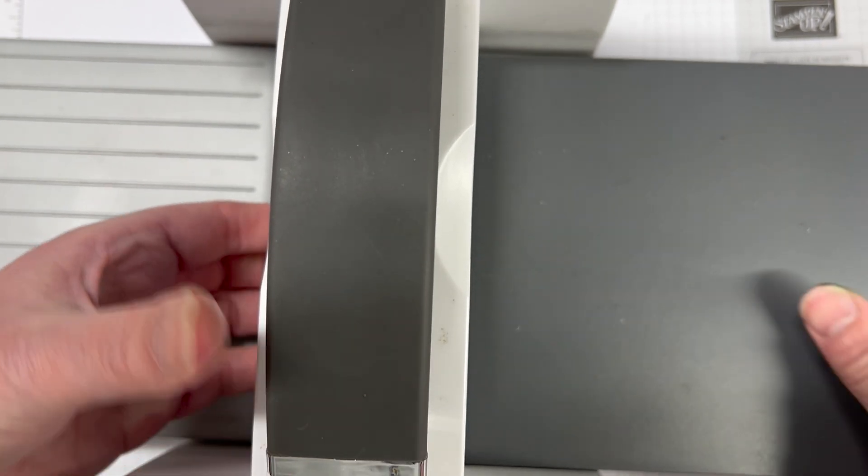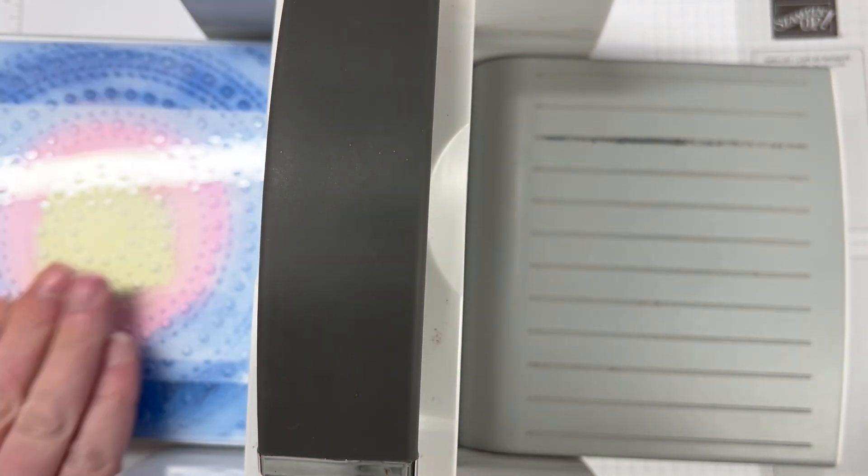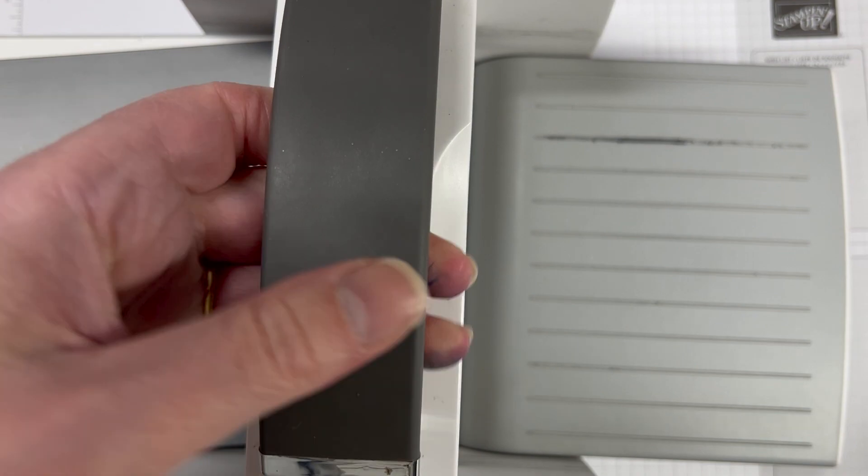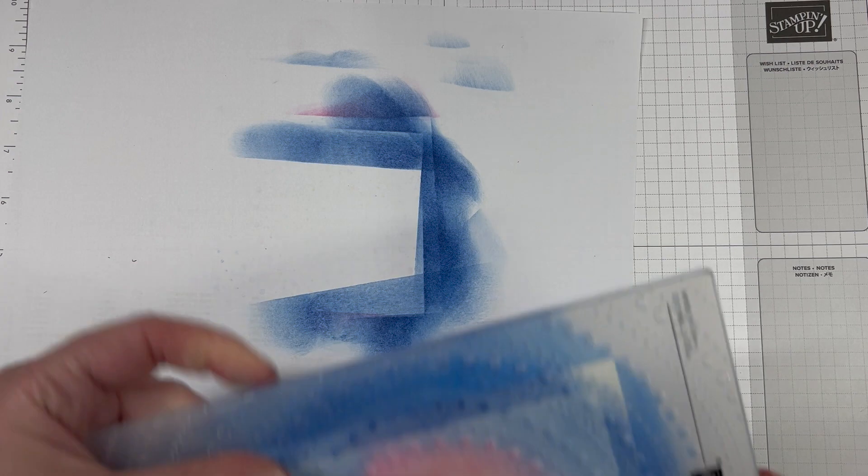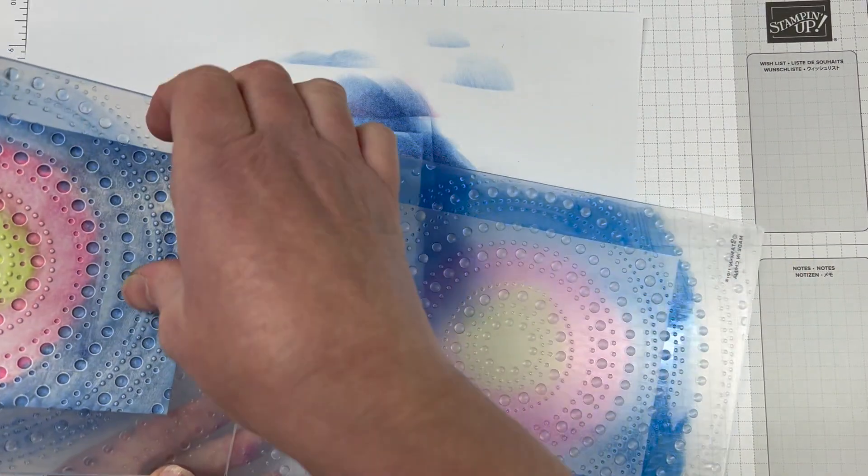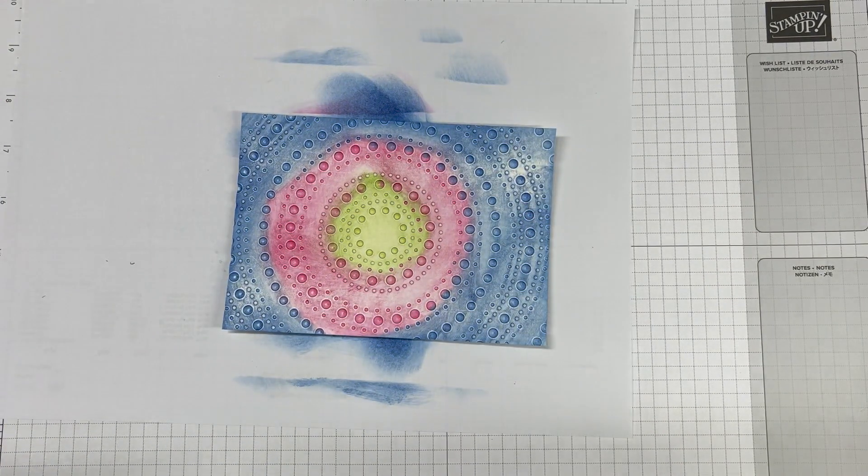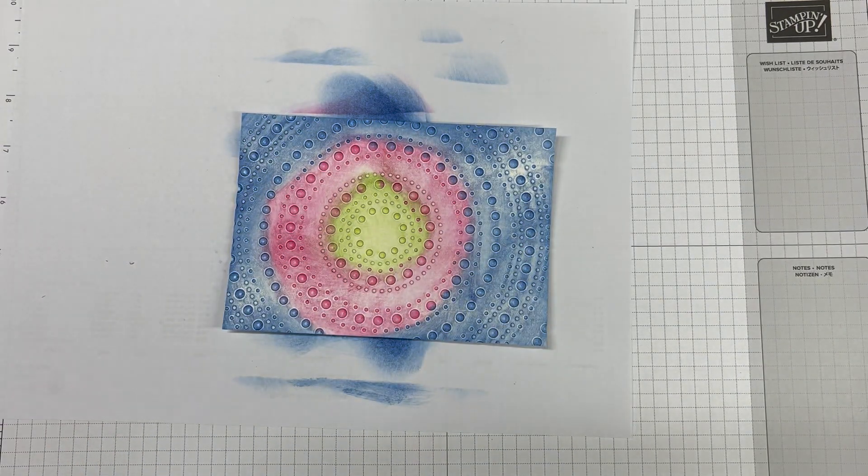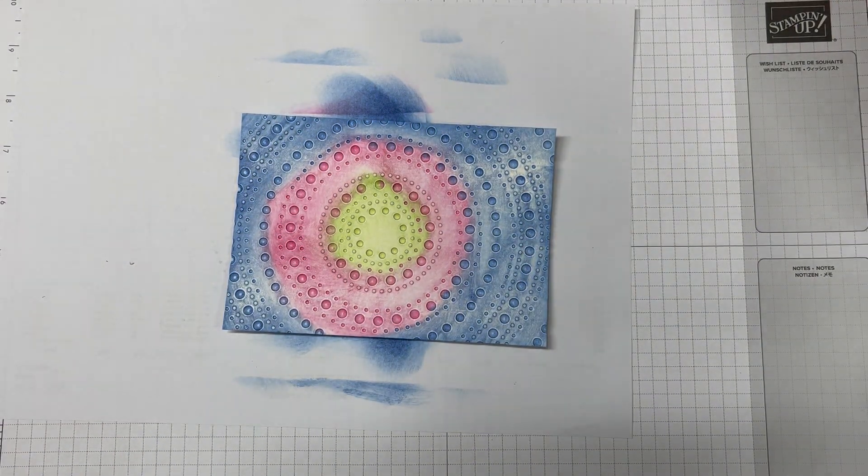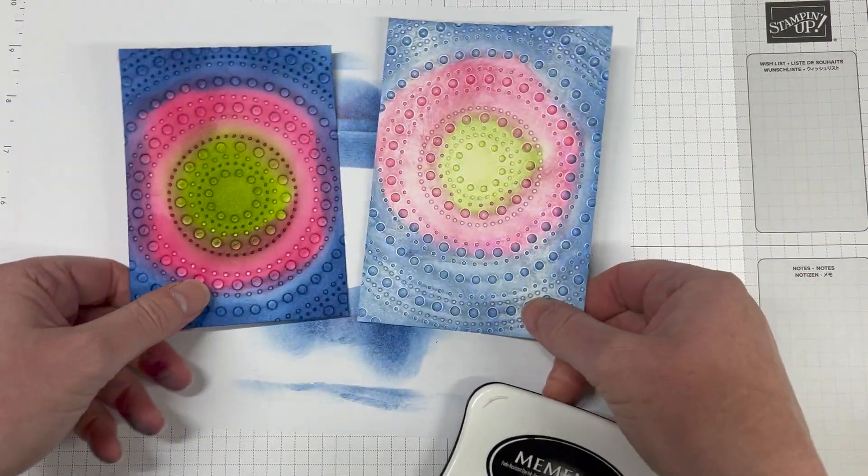I'm using Memento Tuxedo black ink. You could use any colour ink, it doesn't have to be black, you could use Night of Navy. You could change your colours around. It does need to be a dark colour to make it really pop out. It does use a ton of ink as well. We have our two versions here now, and lots of ink on our embossing folder. The quick tip to clean that is just to run it under some water, it comes straight off.